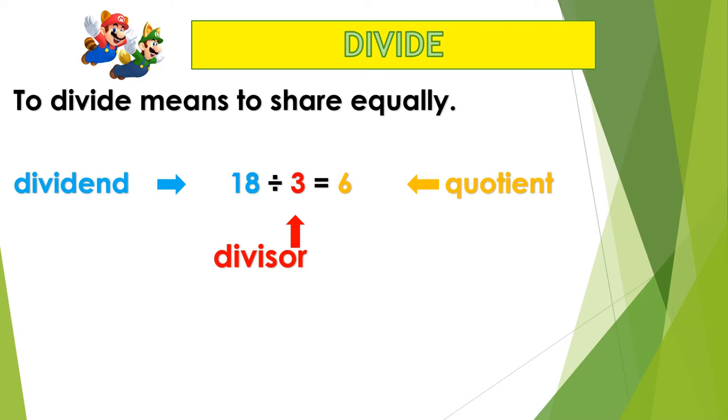The first number, 18, is the dividend. It is also the largest number. The second number is 3, which is the divisor and always goes together with the division sign. And the last number is the answer to a division sum or quotient.